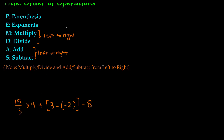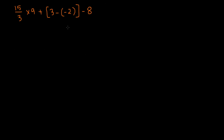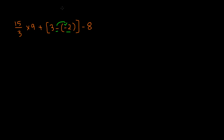According to our PEMDAS method, we have to do parentheses first. We have two pairs — so which one should we do first? In brackets we have 3 minus, and in the round parentheses we have negative 2. We have to do the negative 2 first because we have to distribute this negative sign to the negative 2. When I say distribute, we're going to multiply the negative sign by negative 2. A negative sign can also be viewed as negative 1, so let's put a small 1 here to help us multiply, giving us negative 1 times negative 2.